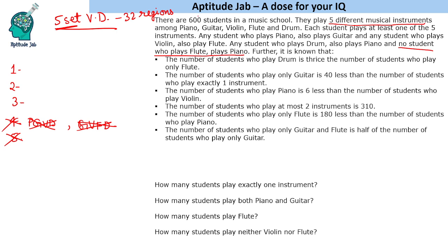We will only get combinations of one, two, or three instruments. First, looking at single instruments: a person who plays piano must also play guitar, so only piano is not possible. Drum also requires piano, so only drum is not possible. However, we can have only guitar and only flute, since no additional instrument is forced for either of these.